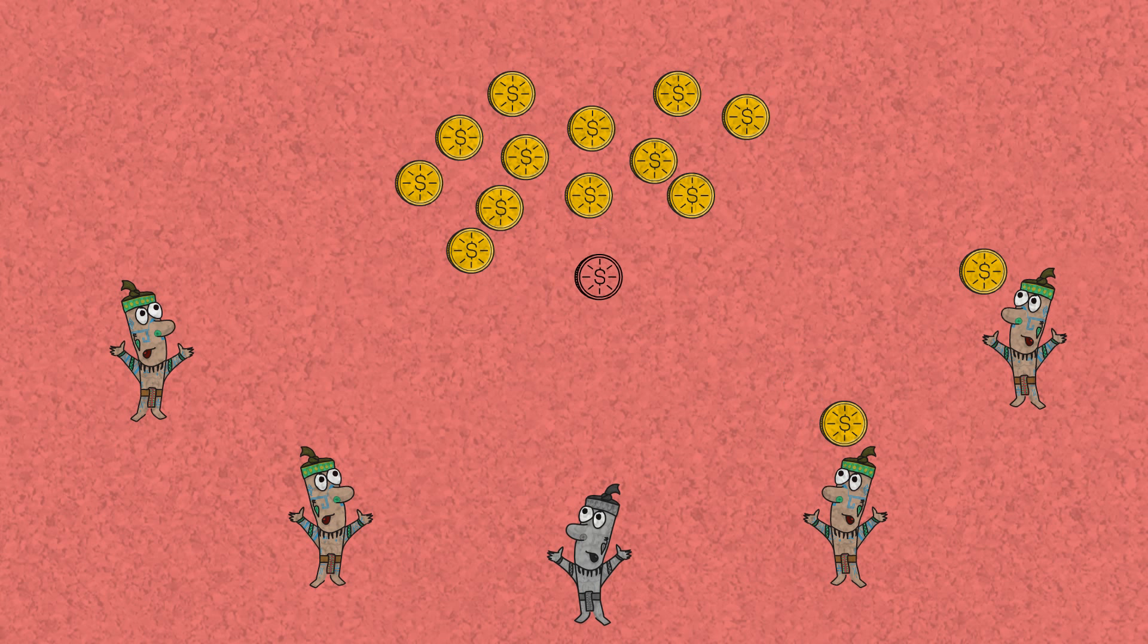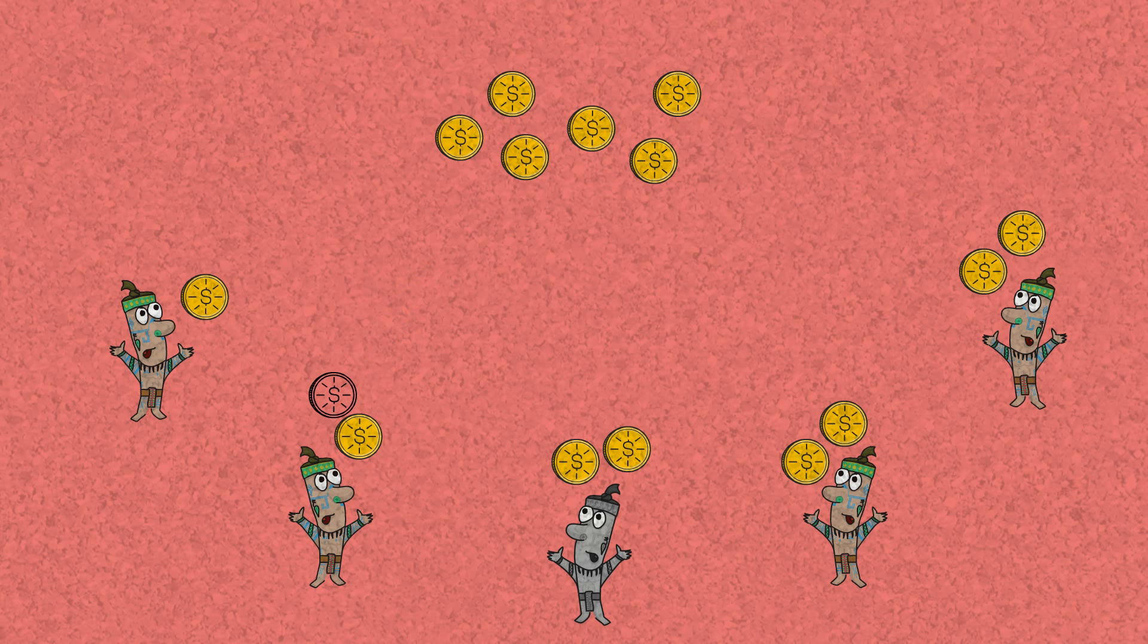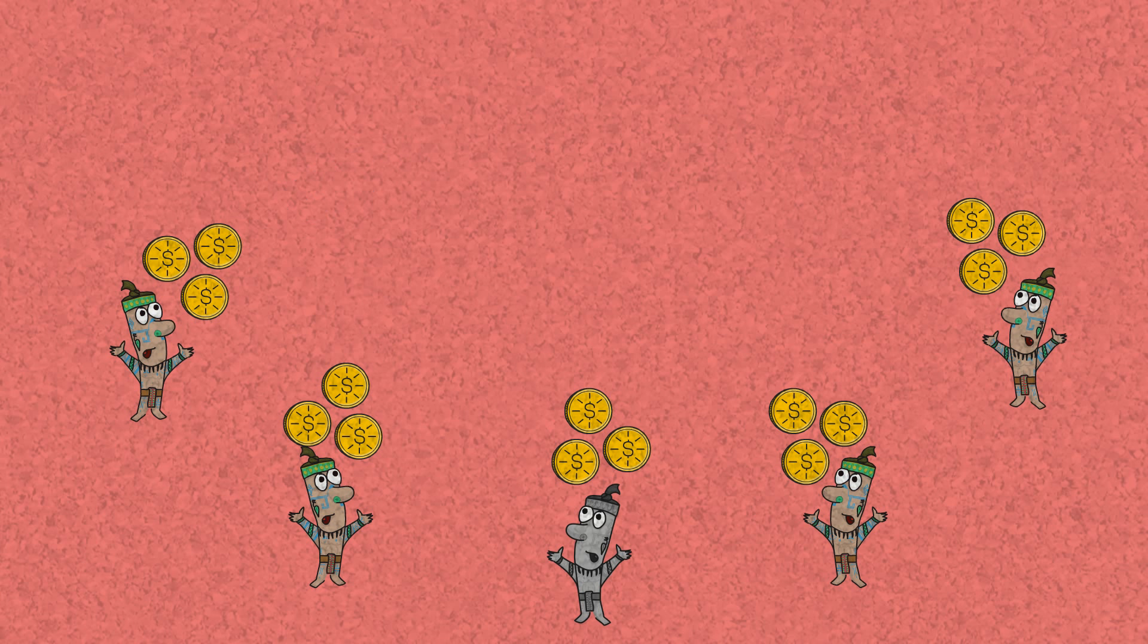So we will start distributing the coins, giving each person a coin at a time until we run out of coins. And as you can see, we end up with three coins for each person. So let's analyze what we've done so far.